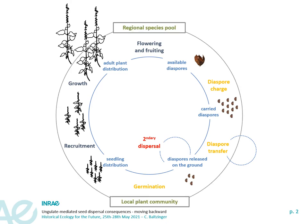If we scale up to the plant community, we know that local plant communities are shaped from the regional species pool, with plants entering the local plant community having to go through three main filters. The first one is the dispersal filter — the ability to reach a given environment — which can be achieved by endozoochory or epizoochory by ungulates, for instance.